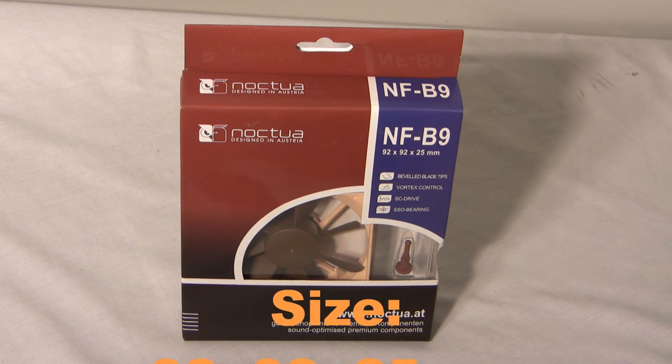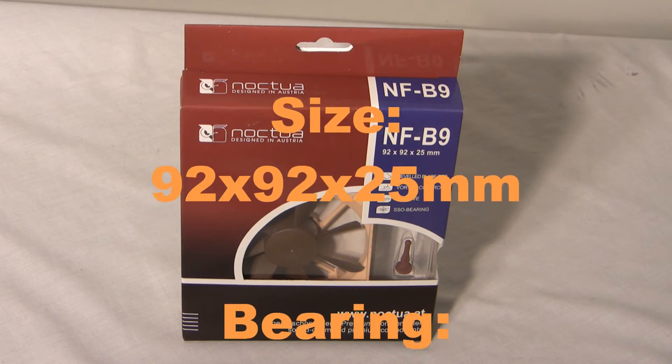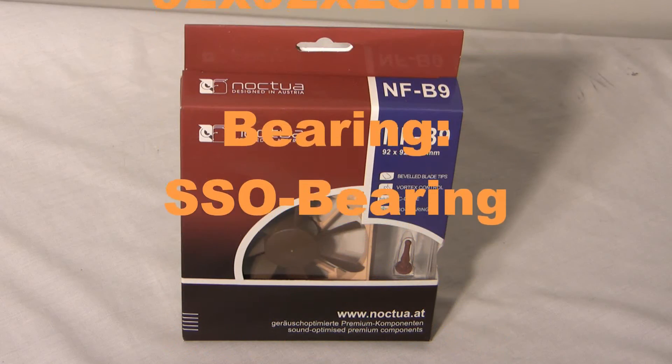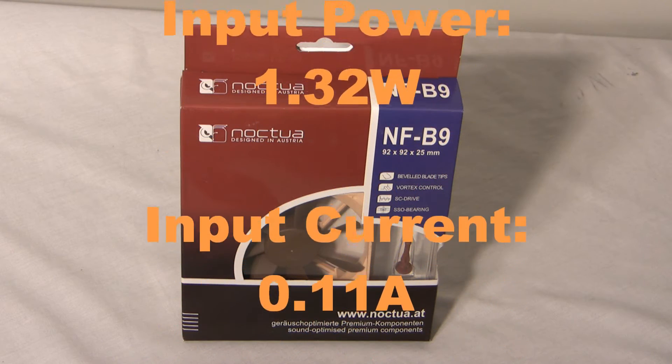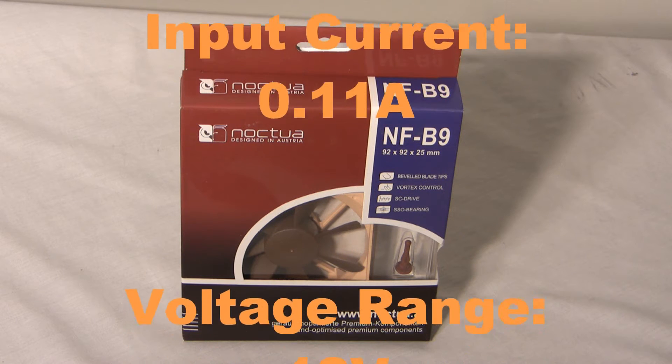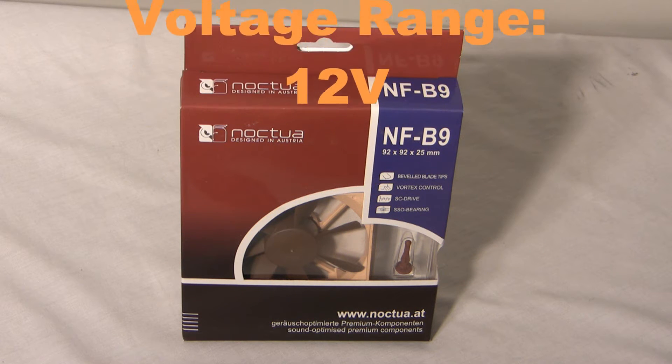The size of this fan is 92 by 92 by 25 millimeters. The bearing is SSO bearing. The input power is 1.32 watts. The input current is 0.11 amps and the voltage range is 12 volts.